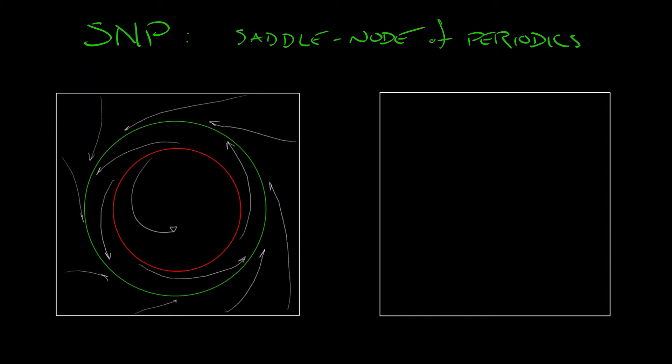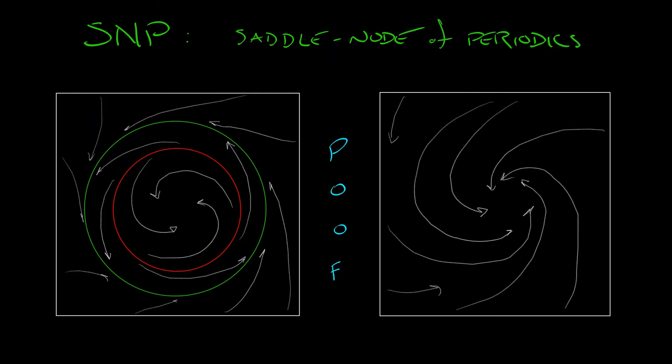But as you change the parameter, they get squeezed together. They get closer and closer until they collide. And these opposite stability limit cycles collapse into each other and poof, they're gone. They vanish, they disappear. After the bifurcation, no more limit cycles.